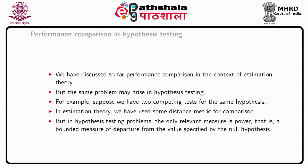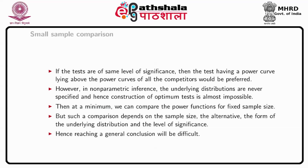Next, we come to the performance comparison in hypothesis testing. Suppose we have two competing tests for the same hypothesis — it is natural to inquire about their relative performance. In estimation theory, we used some distance measure to measure performance, but in hypothesis testing the only relevant measure is the power of the test, which is a bounded measure of departure from the value specified by the null hypothesis. Thus, if the tests are of the same level of significance, the test having a power curve lying above the power curves of all competitors would be preferred. However, in nonparametric inference, the underlying distributions are never specified, and hence construction of an optimum test is almost impossible.